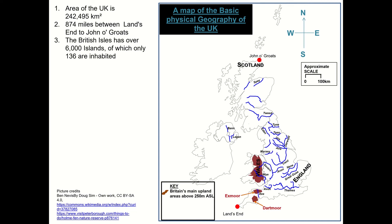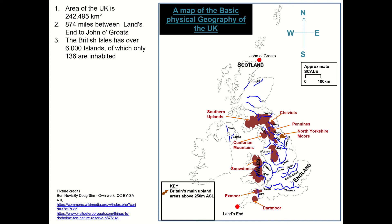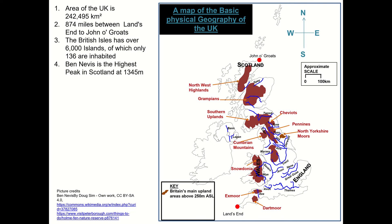We have several upland areas. So from south to north, there's Dartmoor, Exmoor, Snowdonia which is the mountain range that runs through Wales. We've got the Cumbrian Mountains, the Cheviots and the Pennines running in northern England, the southern uplands in southern Scotland. We've got the North York Moors across in the east, just south of where I'm from, the Grampians, and then the northwest highlands. The highest peak in our country is Ben Nevis at one thousand three hundred and forty five metres in Scotland.